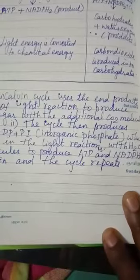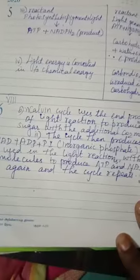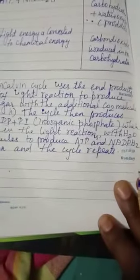The answer to this question: the Calvin cycle uses the end products of light reactions to produce sugar with carbon dioxide molecules. The cycle then produces NAD+, ADP, and Pi (inorganic phosphate), which are used in the light reactions with H2O molecules to produce ATP and NADPH2.